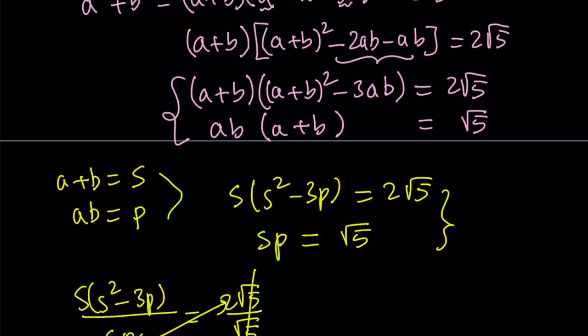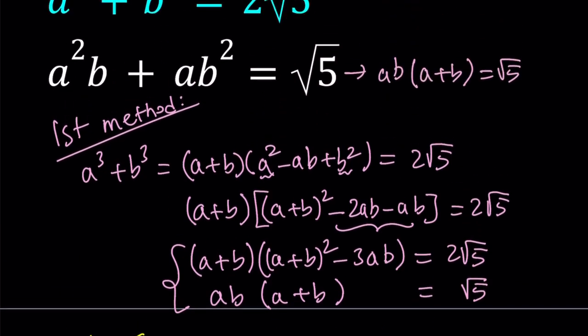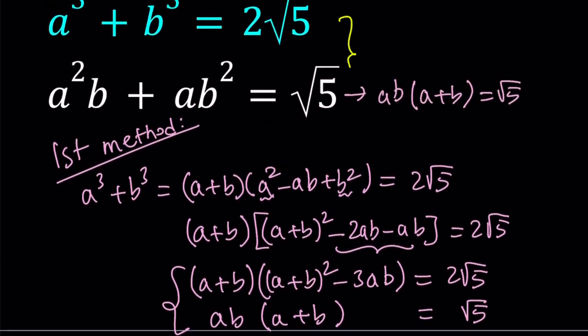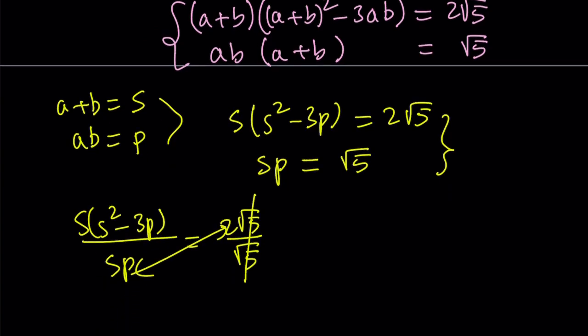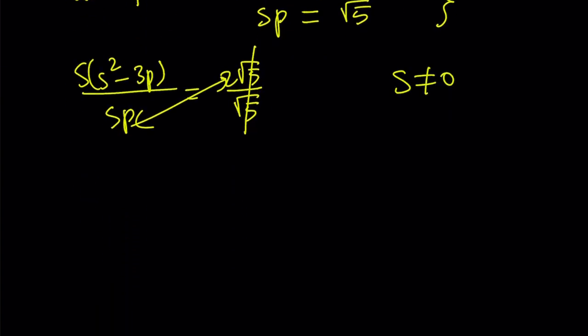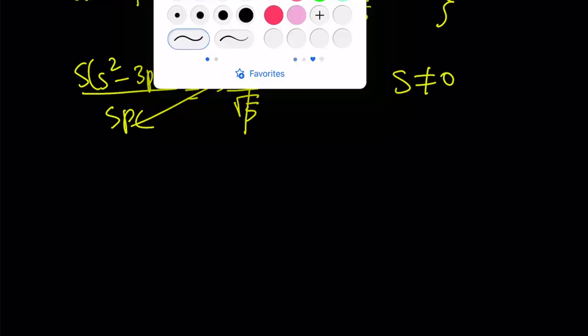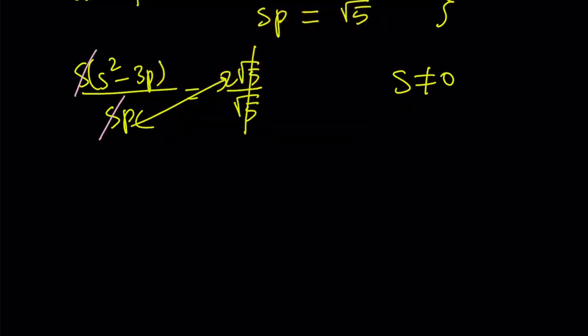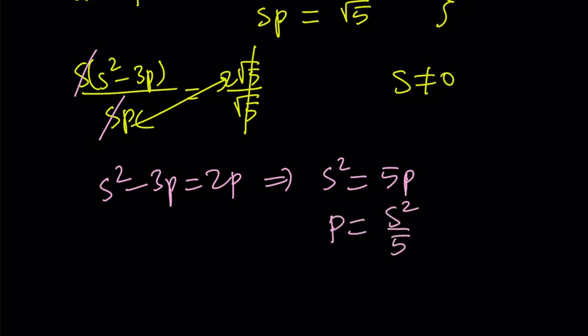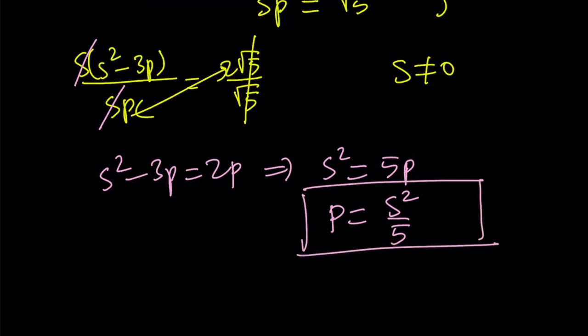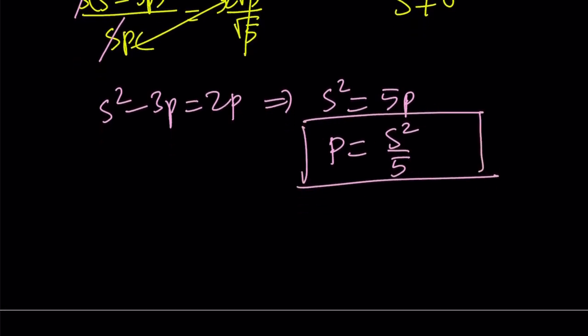Now we have s² - 3p = 2p. We can add 3p to both sides, which gives us s² = 5p. Let's go ahead and isolate p and write it as s²/5. So we were able to write the product in terms of the sum.